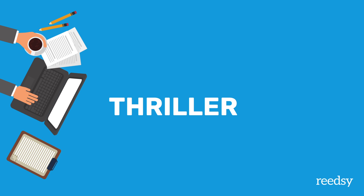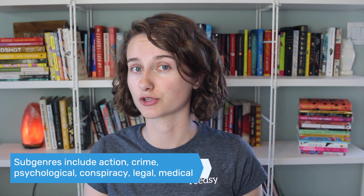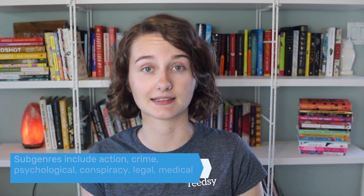Next up is thriller. Thrillers and mysteries are often confused with each other but they do have distinct differences, even though they'll probably overlap greatly in terms of tone and readership. Thrillers are books that have a suspenseful, twisting plotline and usually a dark, suspenseful tone. They often implement things like plot twists, red herrings, or cliffhangers, and have high stakes and feature high-intensity situations. A good way to think about thriller is that if it were a movie it would probably be considered an action movie. Some subgenres include action thrillers, crime thrillers, psychological thrillers, conspiracy thrillers, medical thrillers, and legal thrillers.